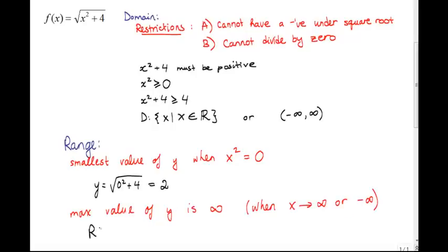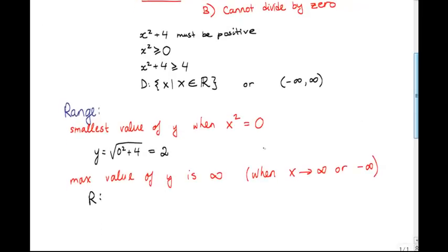So, writing the range down will look like this: y is such that y must be greater than or equal to 2. That's our restriction. On this interval, it exists for all real numbers. Or, in my more preferred way, we could just say that y starts by touching 2 and it goes all the way up to positive infinity.